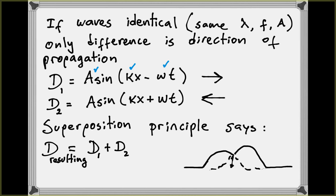We saw this in a previous video where we sent two pulses moving in opposite directions, one to the right and one to the left. When the pulses start to overlap, the displacement that one pulse would tell the medium to have — call it D1 — and the displacement at the same location that the second pulse would produce — D2 — combine so that the actual displacement of the medium is the sum D1 plus D2. At every given point you add the displacements, giving the actual shape of the medium when the two pulses overlap.